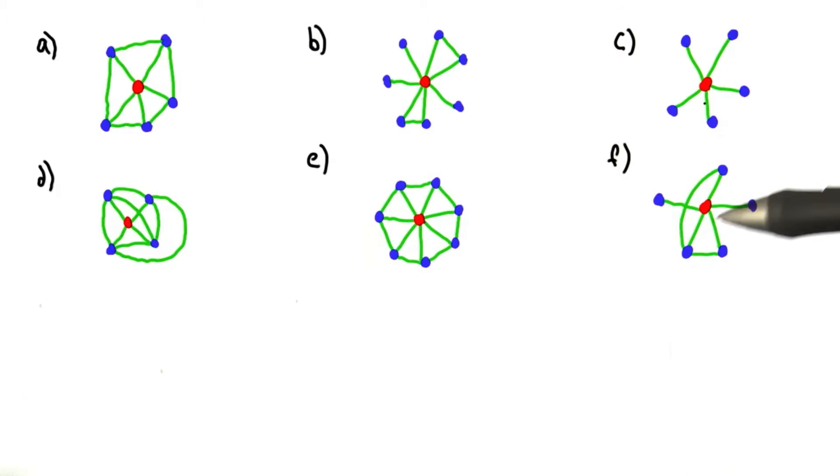For this problem, we had to order these six graphs by the clustering coefficient of the red node. The graphs would be ordered from lowest clustering coefficient to highest.